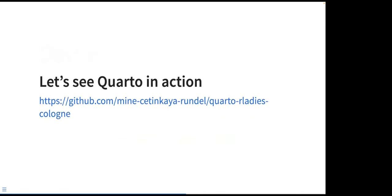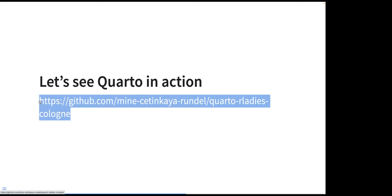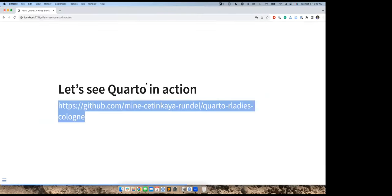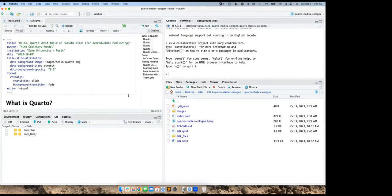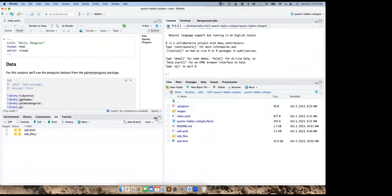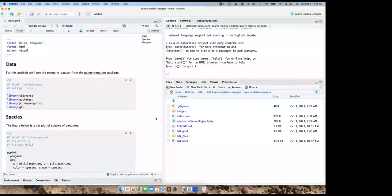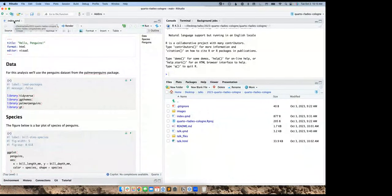Let's see Quarto in action. If you'd like to follow along, you can go to this repository where you'll find my starting documents. I'm going to get out of these slides and go to RStudio. I'll start with a document called index.qmd — it's named index for a reason we'll get to in a bit. The important thing for now is that we have a document.